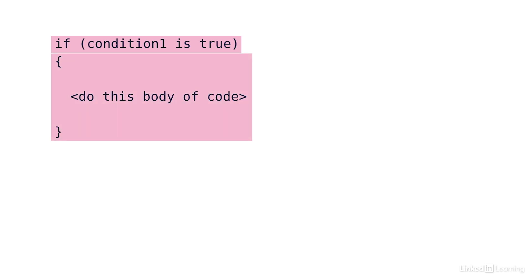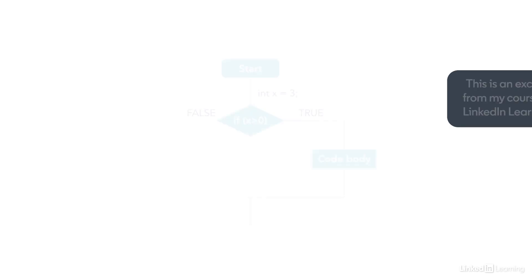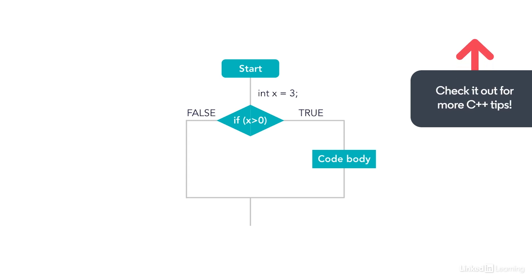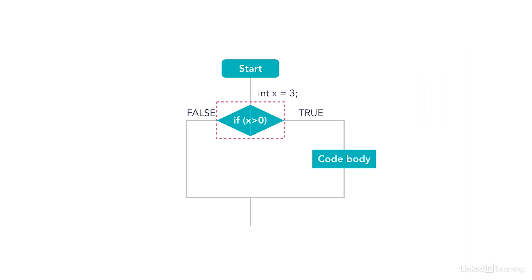If the condition is not true, it will skip over the entire curly brackets and continue on. If we look at this flowchart based on this if structure, we can say x is equal to 3. If x is greater than 0...